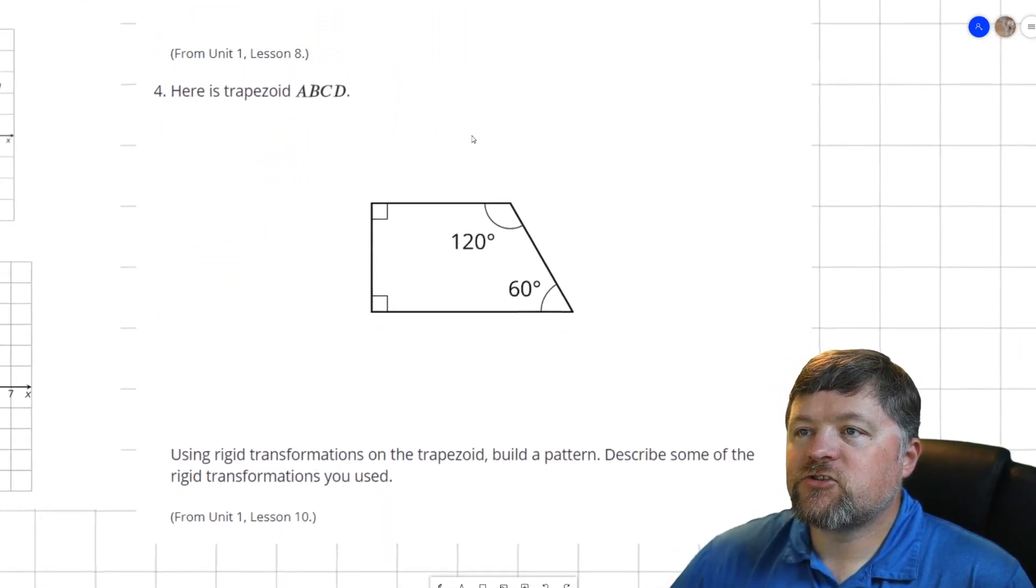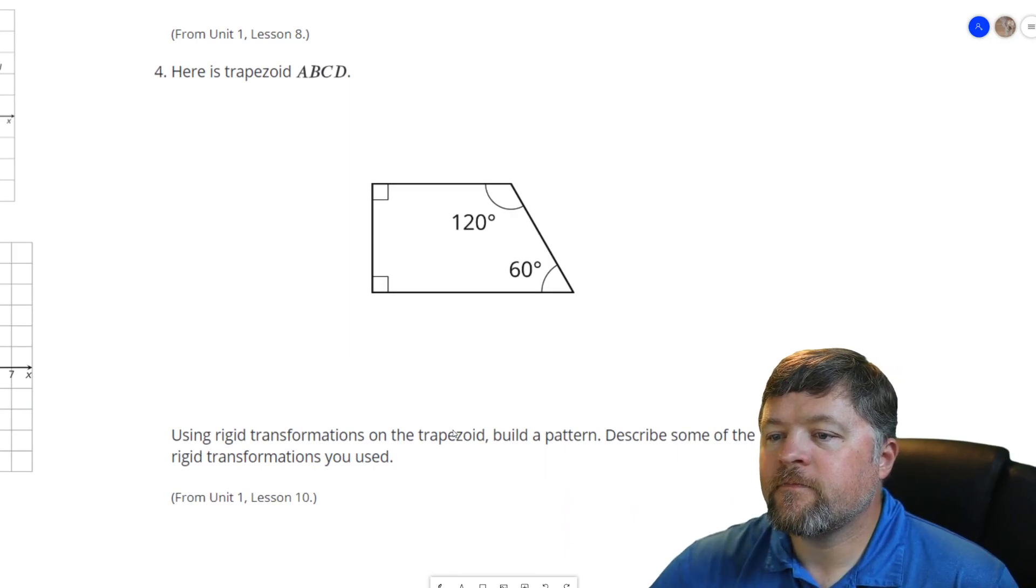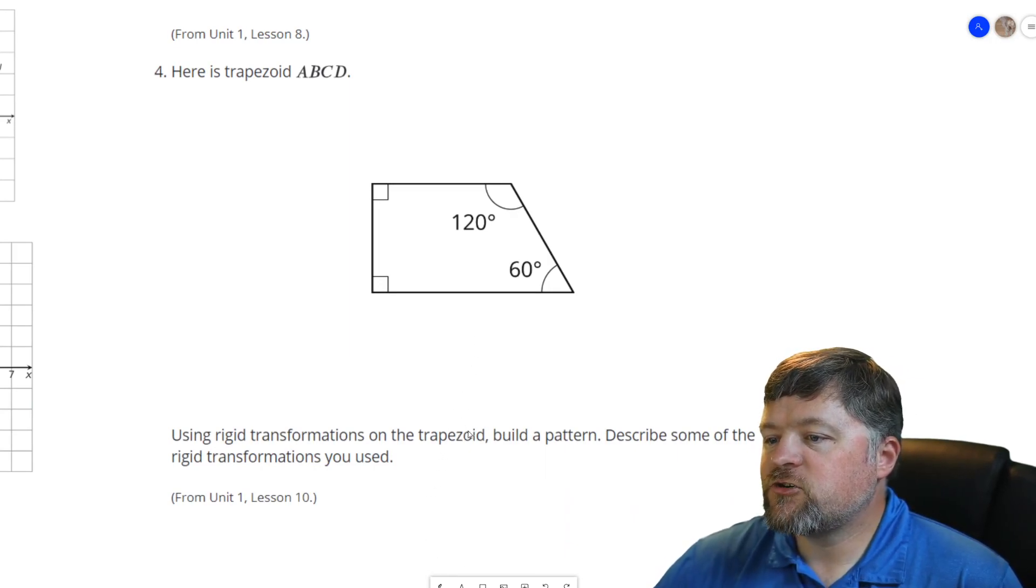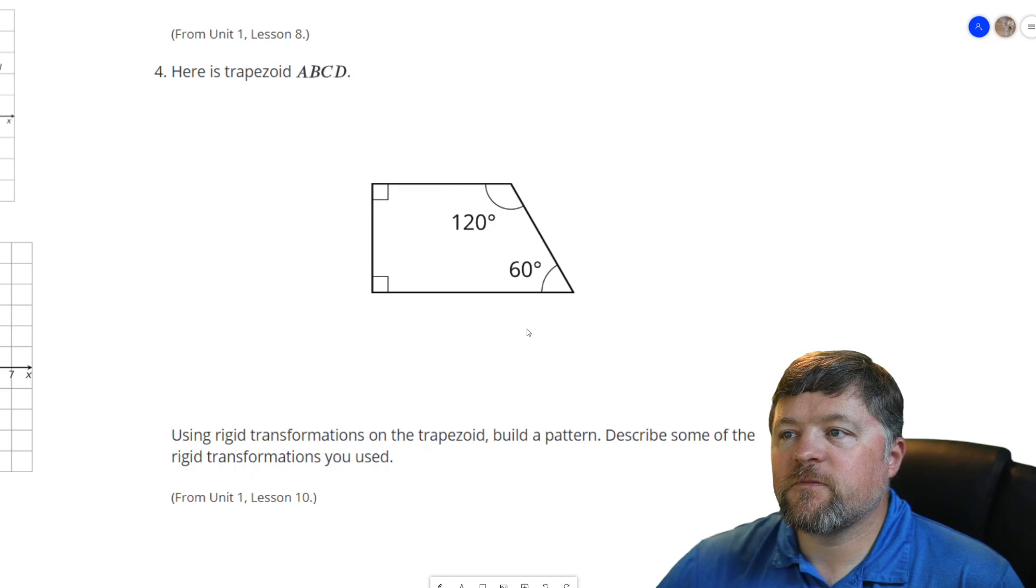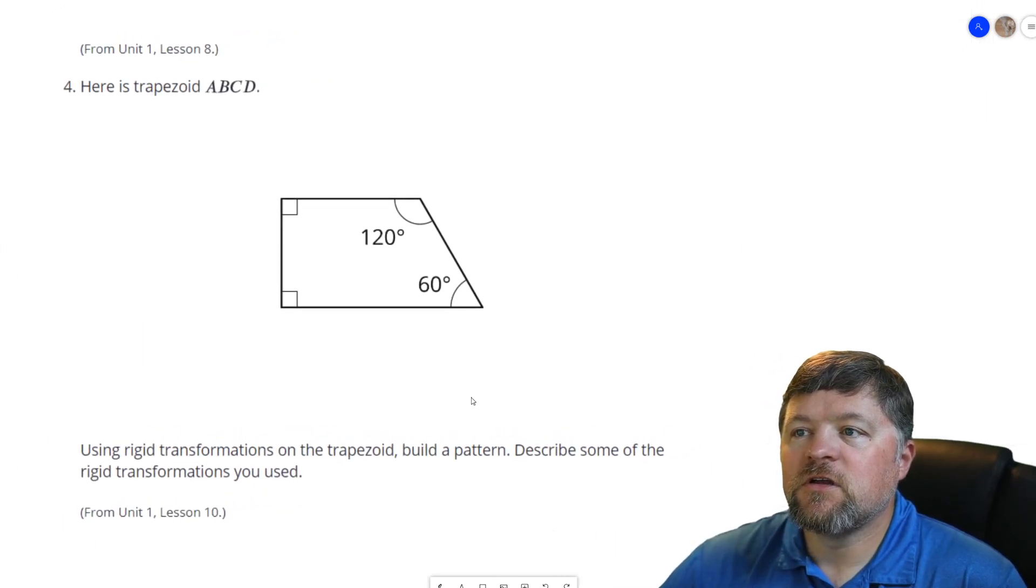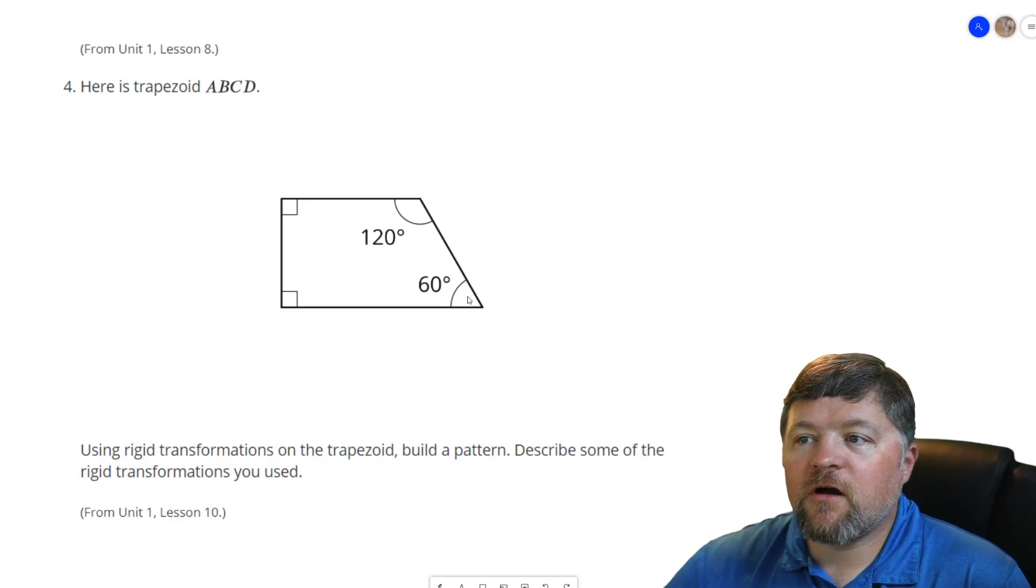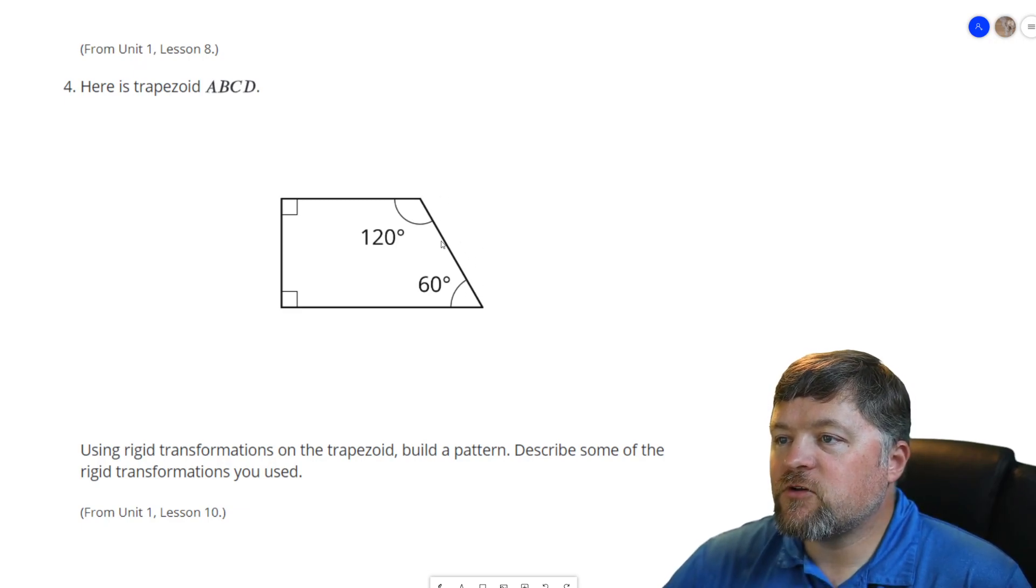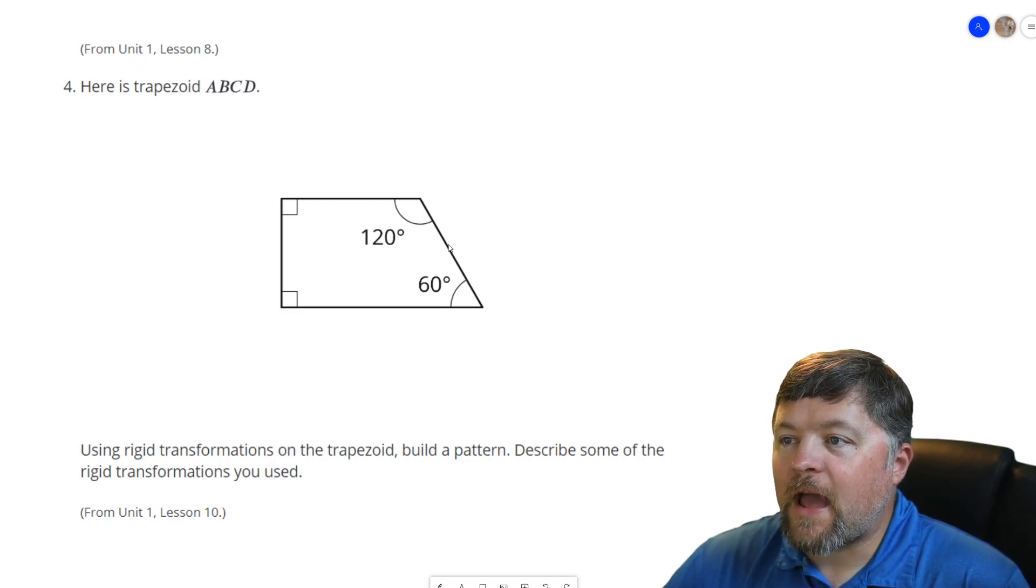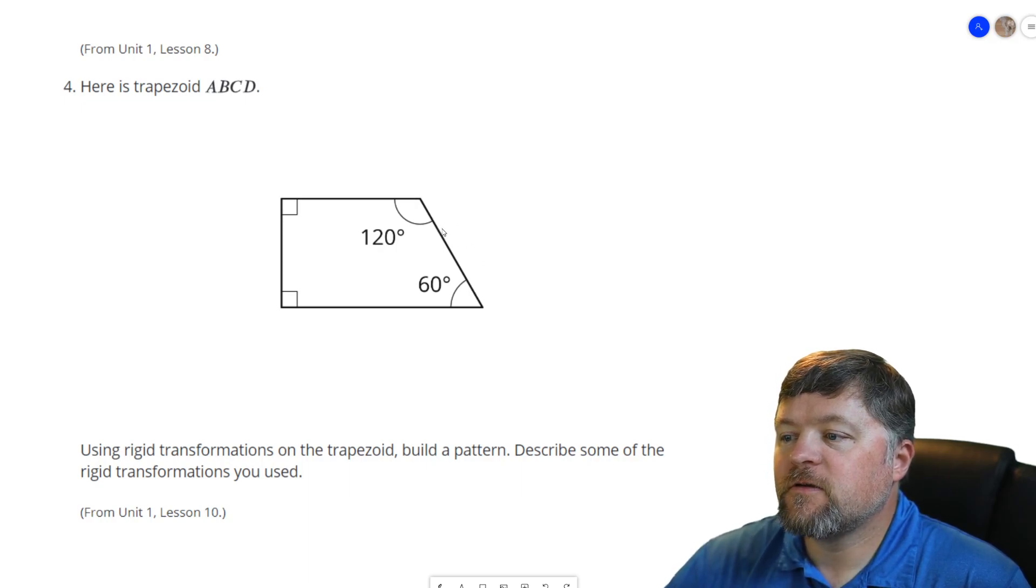Here's trapezoid ABCD. Use rigid transformations on the trapezoid, build a pattern, describe some of the rigid transformations you used. So this one can be a little bit of a free for all. How would you like to create a pattern from these?